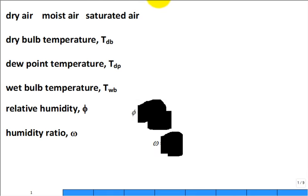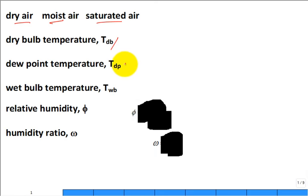This is our third lecture on psychrometrics. Last time we talked about dry air, moist air, and saturated air. We have our dry bulb, our wet bulb, and our dew point temperature — three temperatures — and we have two humidities.